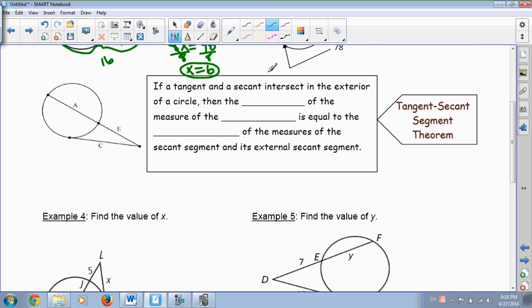So let's go ahead and look at our final theorem that we're going to be learning today. Three different theorems. This one is called the tangent-secant-segment theorem. Again, very wordy, but not hard to actually do. If a tangent and a secant intersect in the exterior of the circle, then the square of the measure of the tangent is equal to the product of the measure of the secant segment and its external secant segment.